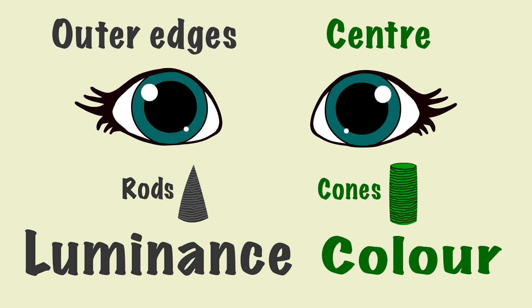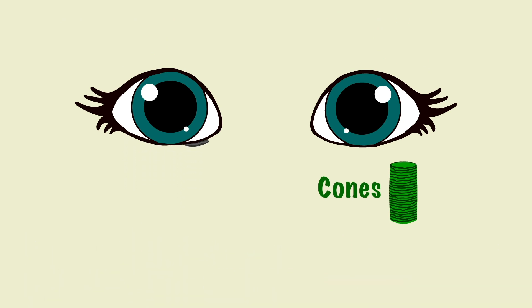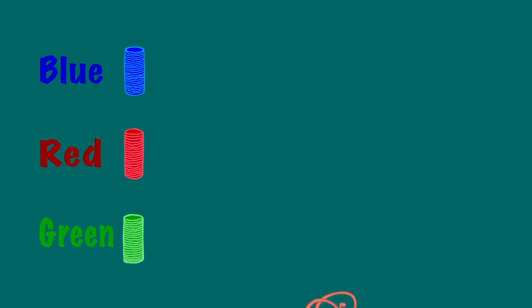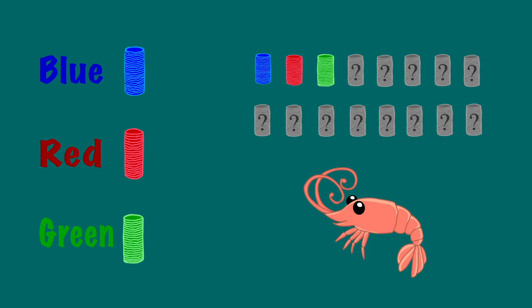This is why you can sometimes see something in the corner of your eye in the dark, but when you look directly at it, you can't see it as clearly anymore. Humans have three types of cones — blue, red and green. Shrimps have 16 types of cones, so imagine how different the world looks to them.